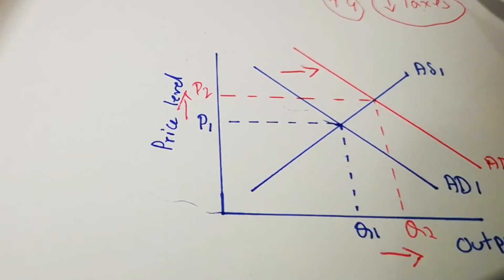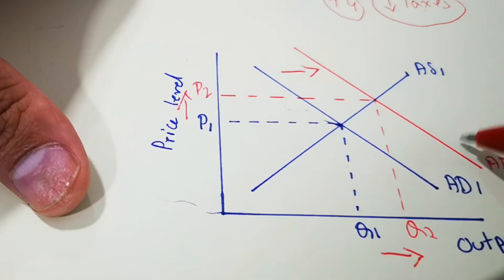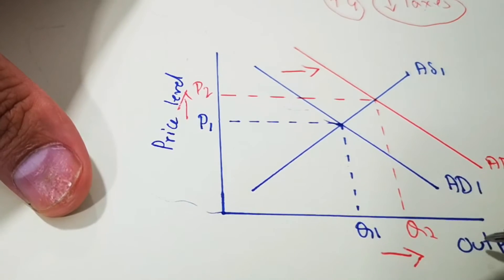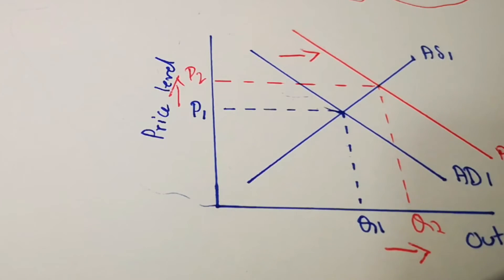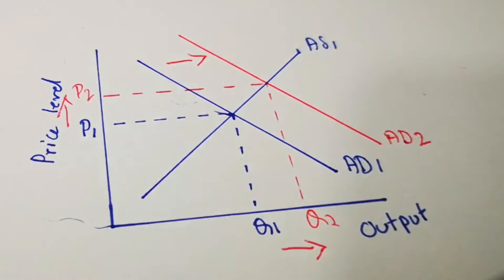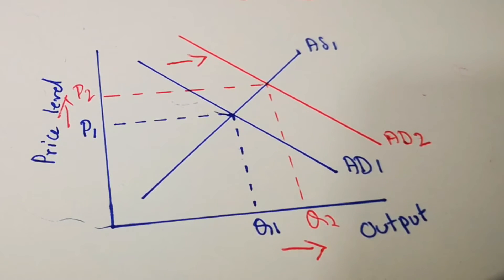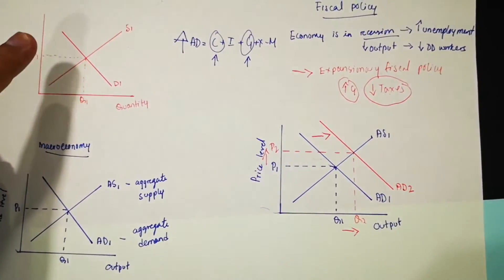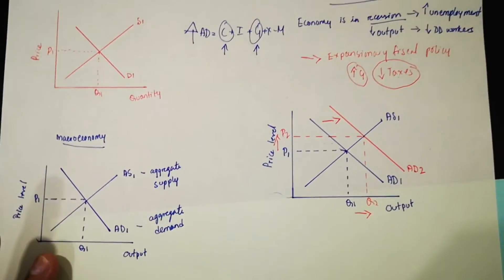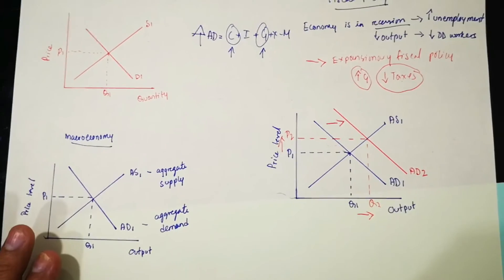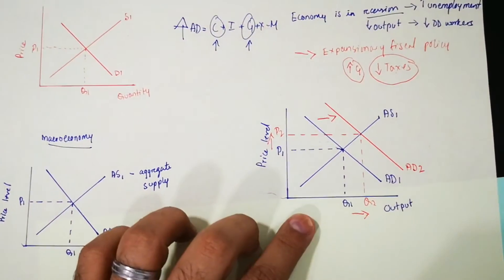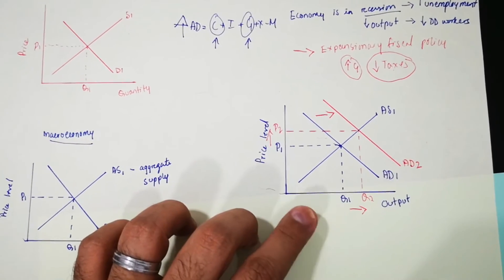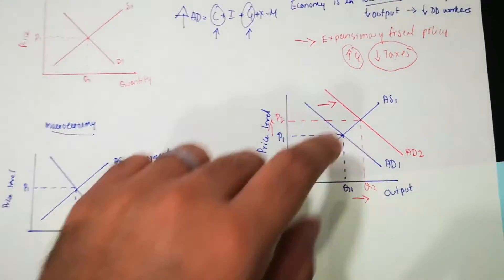So how does expansionary fiscal policy work? The aggregate demand shifts to the right. As a result, output increases from Q1 to Q2, and as output increases that increases economic growth. At the same time, as firms need to produce more goods and services, they employ more workers, and that reduces unemployment. So to recap: we started with the initial demand and supply diagram, then drew the macroeconomic aggregate demand and supply diagram, and showed how expansionary fiscal policy shifts aggregate demand to the right.